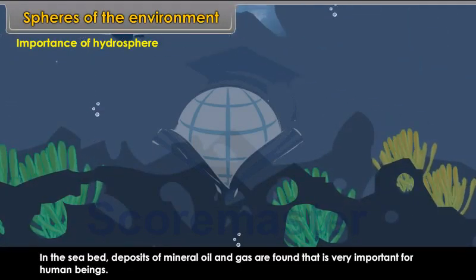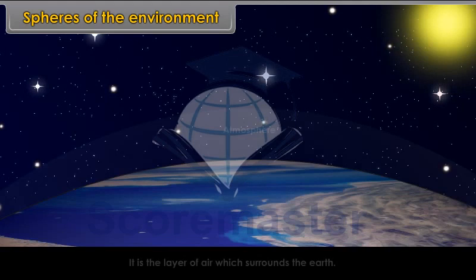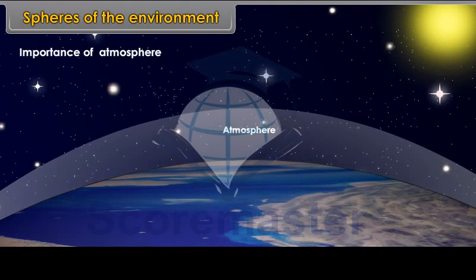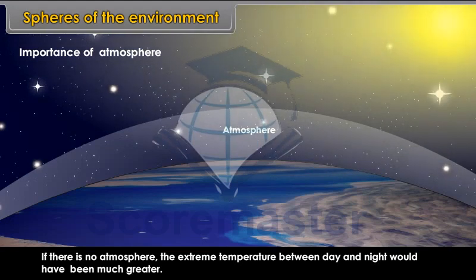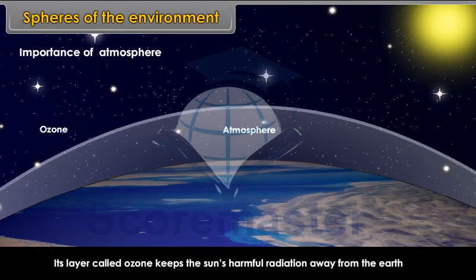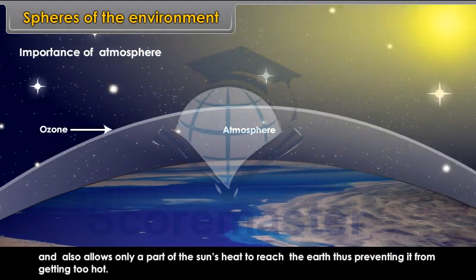Atmosphere. It is the layer of air which surrounds the earth. Importance of atmosphere: if there is no atmosphere, the extreme temperature between day and night would have been much greater. It also controls the extremes of the seasons. The atmosphere provides a setting in which all forms of life are created and sustained. Its layer called ozone keeps the sun's harmful radiation away from the earth and allows only a part of the sun's heat to reach the earth, thus preventing it from getting too hot.